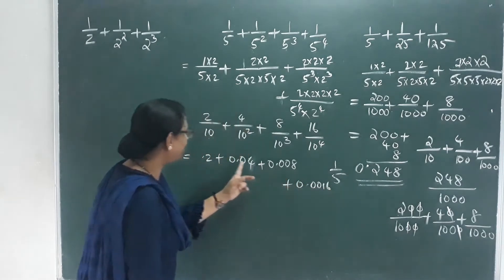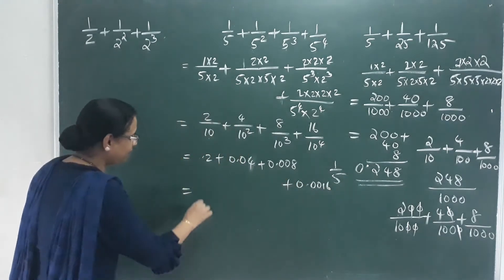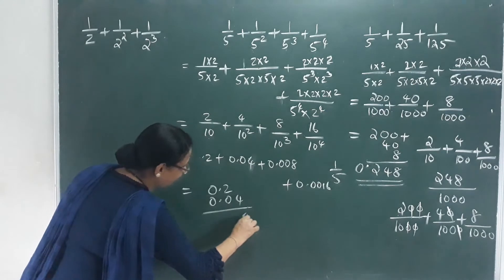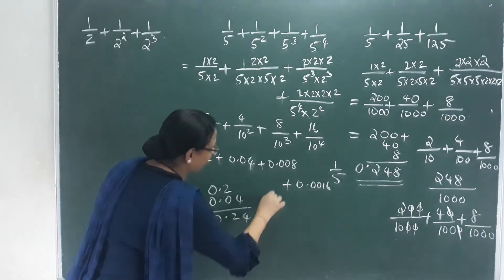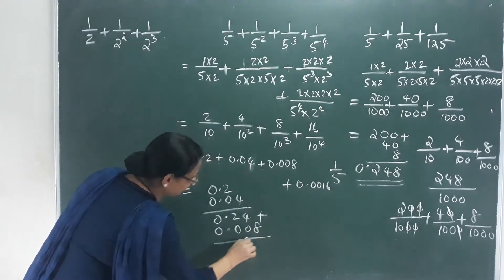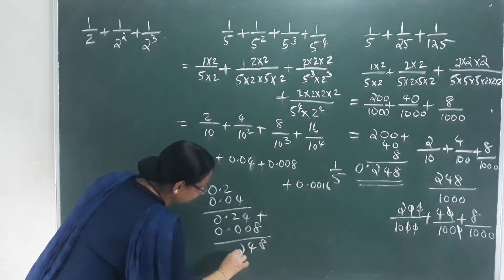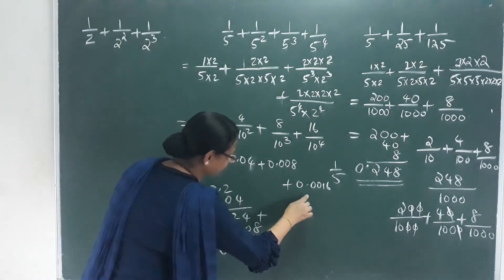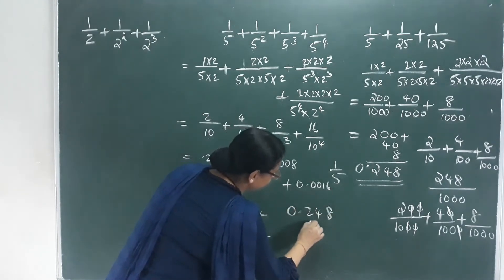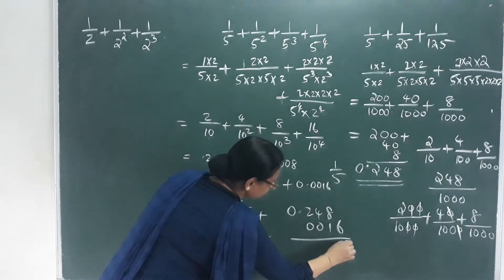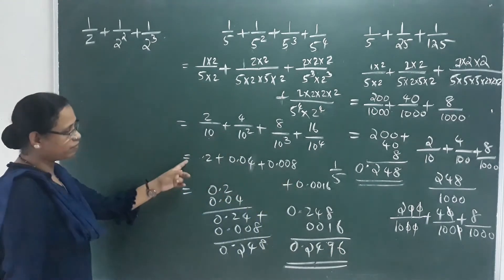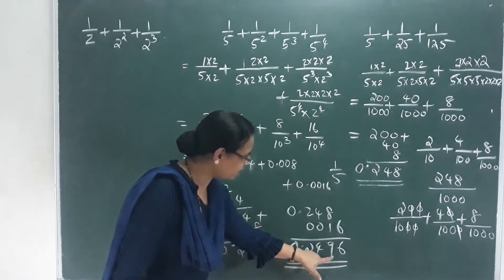So if we add this again, we will add a decimal form. We have 0.2, this is also 0.04, then 0.008, then adding 8, 4, 2. You add the decimal again — 0.248. Here is 0.016. So the final decimal form is 0.2496.